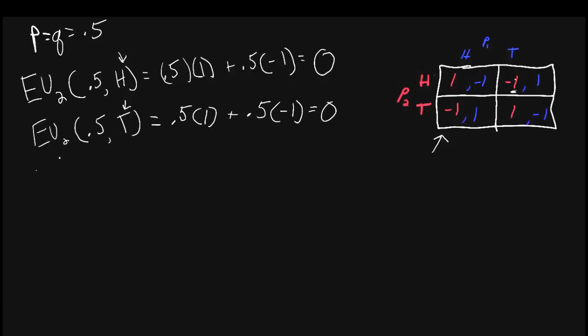So first of all, we see that player 2, when player 1 is playing 0.5 — which is the mixed strategy Nash equilibrium — is indifferent between playing heads and tails. If p were greater than 0.5, the expected utility for player 2 would be greater by also playing heads. And if p were less than 0.5, player 2's expected utility would be greater when playing tails. But assuming player 1 is randomizing with probability 0.5, what is player 2's expected utility when player 2 randomizes or plays heads with probability q?